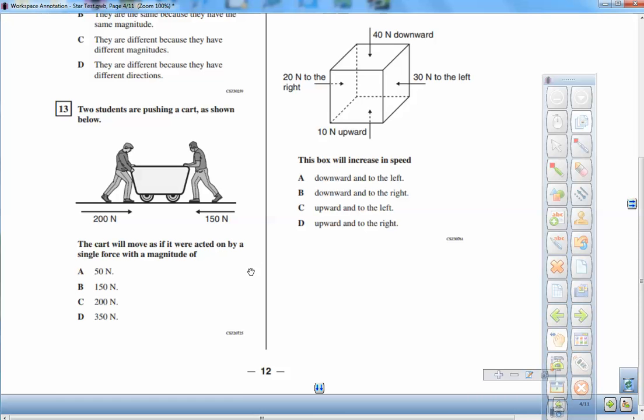And forces that oppose each other and are unbalanced, you subtract because they're going opposite directions. So the net force, the resultant force vector, would go to the right. And 200 minus 150 is 50 Newtons to the right. So the cart will move as if it were acted on by a single force with a magnitude of 50 Newtons. And the direction would be to the right. So letter A is the answer for number 13.